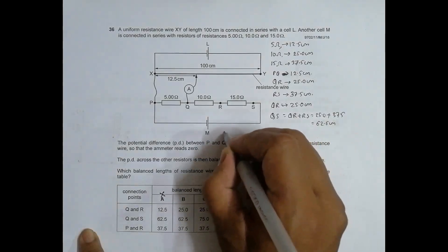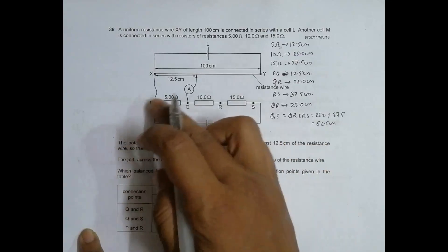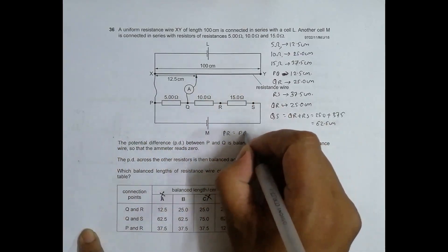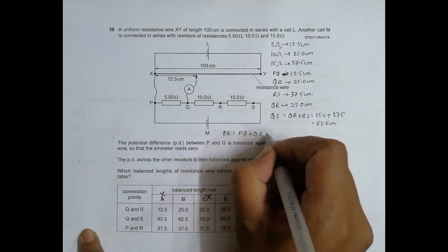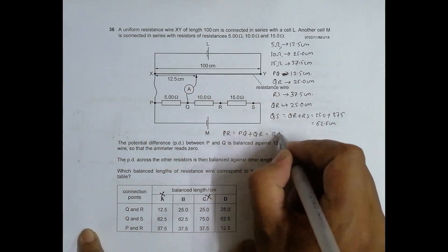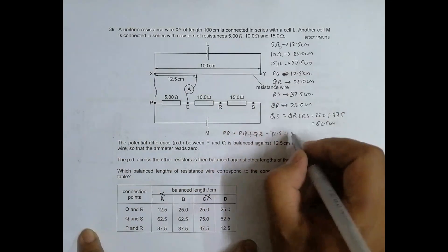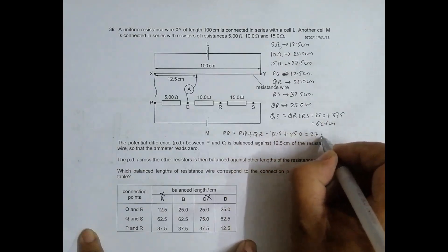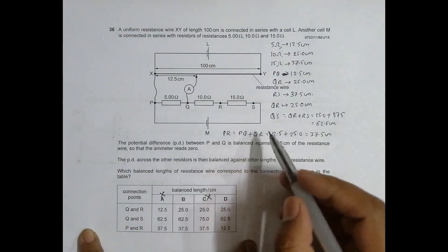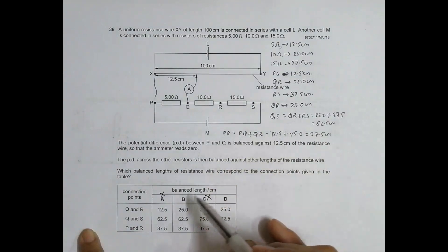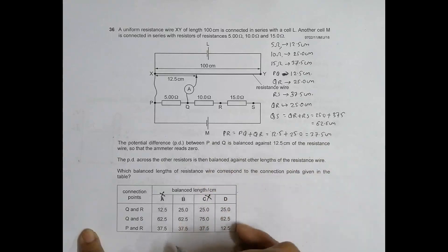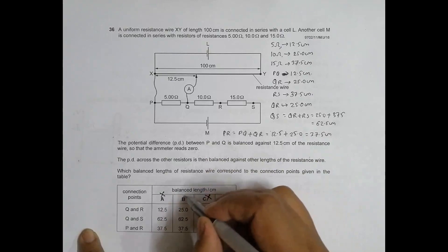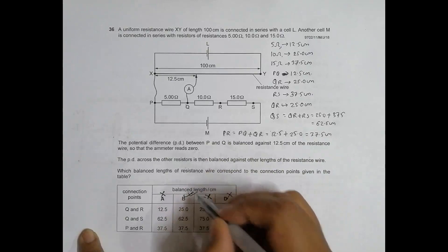Now next is PR. So PR is equal to PQ plus QR. That's equal to PQ is 12.5 centimeters plus QR is 25.0 centimeters, that's equal to 37.5 centimeters. So PR is equal to 37.5. The qualifiers are B and D. So PR is 37.5 and in option D, PR is 12.5, so D disqualifies and the correct answer is choice number B.